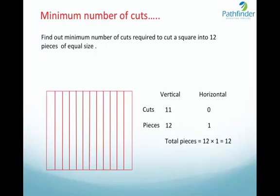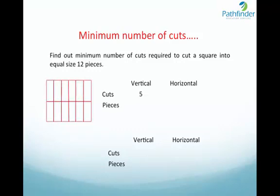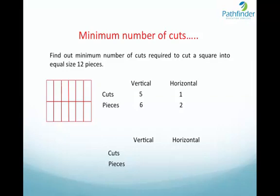Can we reduce the number of cuts required? Let us see. Suppose we give 5 cuts along the vertical direction and 1 cut along the horizontal direction. 5 vertical cuts give rise to 6 pieces, and 1 horizontal cut gives rise to 2 pieces. Total number of pieces = 6 × 2 = 12. So we get the same 12 pieces by applying only 6 cuts.